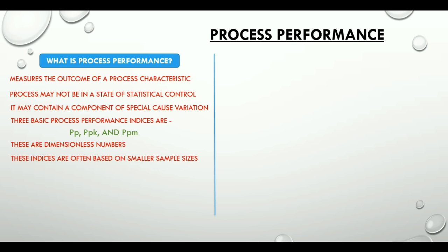Let's look at the process performance indices now. PP is the ratio of the difference between USL and LSL to natural process variation. That is USL minus LSL divided by 6S, S as in standard deviation.